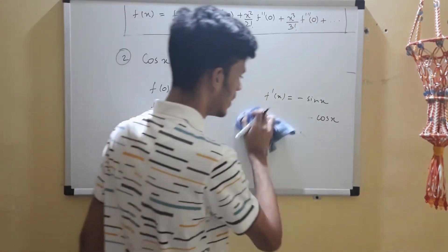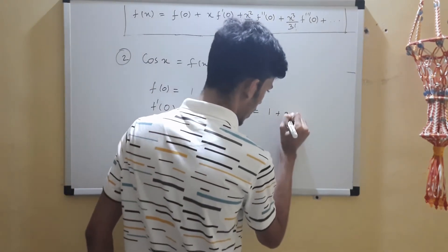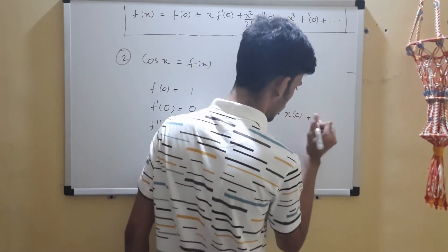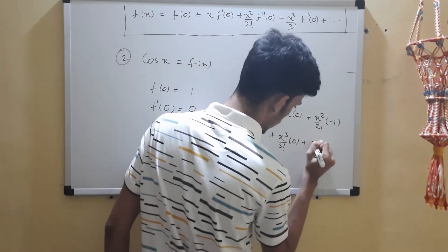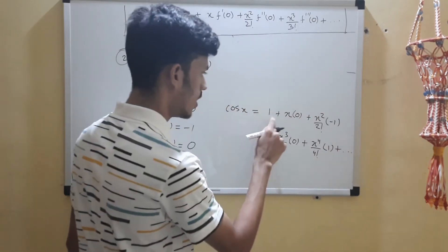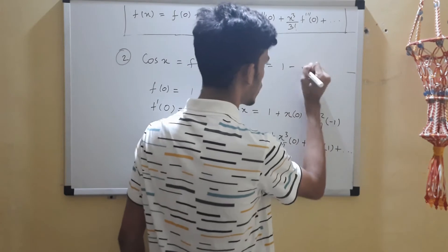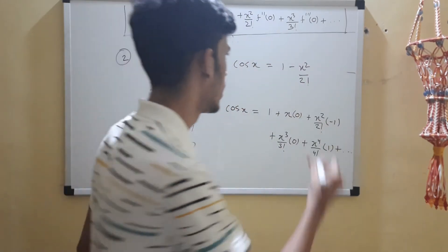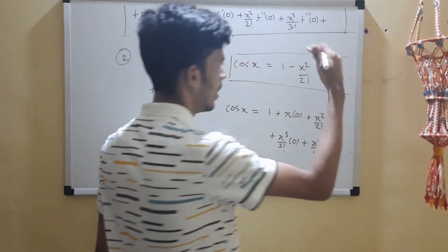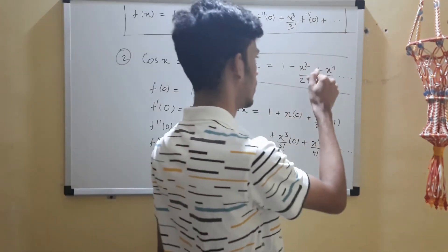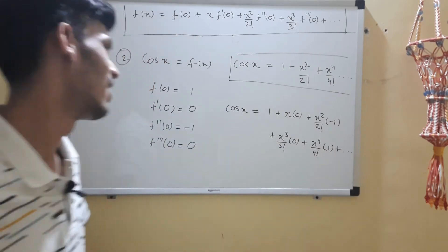Now plugging these values into the series for cos x: starting with 1, then x times 0, then x squared upon 2 factorial times minus 1, then x cubed times 0, and so on. Simplifying: cos x equals 1 minus x squared upon 2 factorial plus x to the power 4 upon 4 factorial, and so on. Only even powers appear with alternating plus/minus signs — but again, don't memorize it; derive it.